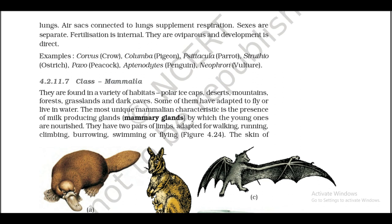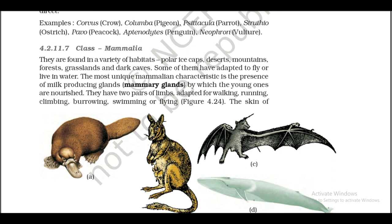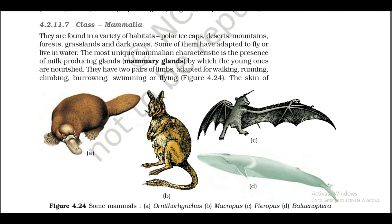Examples: Corvus (crow), Columba (pigeon), Psittacula (parrot), Struthio (ostrich), Pavo (peacock), Aptenodytes (penguin), Neophron (vulture).